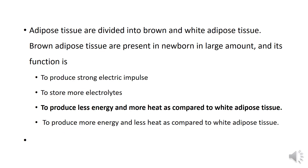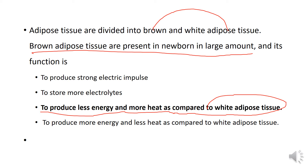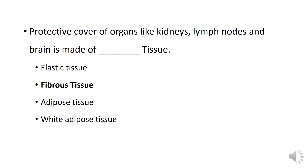Adipose tissue is divided into brown and white. Brown adipose tissue is found in large amounts, and its main function is to produce less energy and more heat as compared to white adipose tissue.